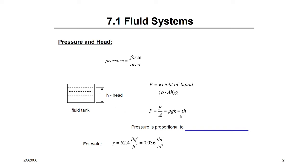If you assume that ρ (density) inside the tank is uniform and not changing, and gravity is not changing on the same level, then what is directly proportional to the pressure is the head. That's why we always use the head instead of pressure for fluid systems, because it is the only parameter proportional to the pressure.